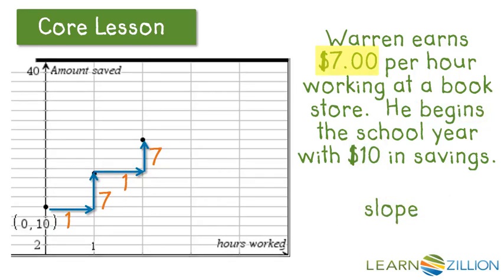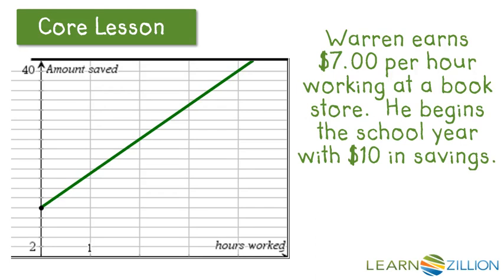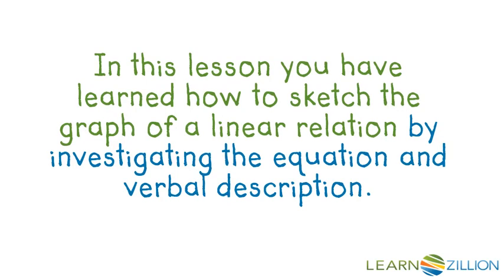Our slope is 7, so for every one hour Warren works, the amount he has saved will increase by 7. We count out one hour worked and seven more dollars saved, then another hour worked and seven more dollars. We plot those two points, then connect them with a ruler. That's how we sketch this scenario — start with the y-intercept, count out two more points using the slope, and connect your line. In this lesson you've learned how to sketch the graph of a linear relation by investigating the equation and verbal description.